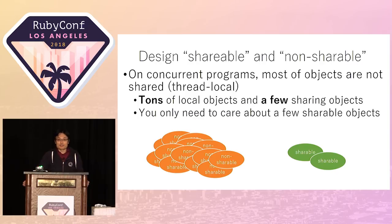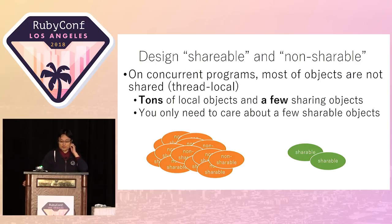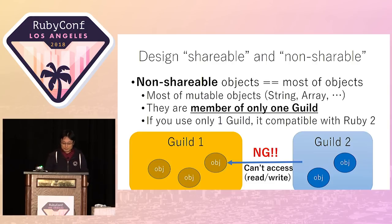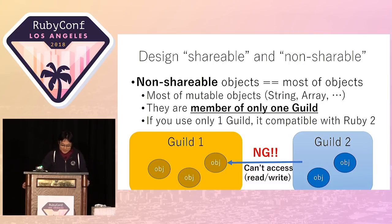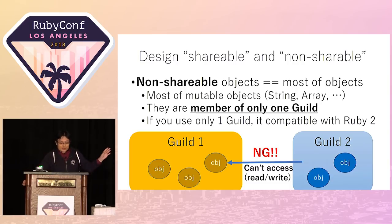Generally, most objects are thread-local for ordinary concurrent programs. Only a few objects are shared, so we only need to concentrate on those sharing objects to make concurrent programs. Non-shareable objects are equal to most ordinary objects. Ruby programs make many strings, arrays, hashes and so on — they are mutable and non-shareable. A non-shareable object is a member of one Guild, and other Guilds can't access it.